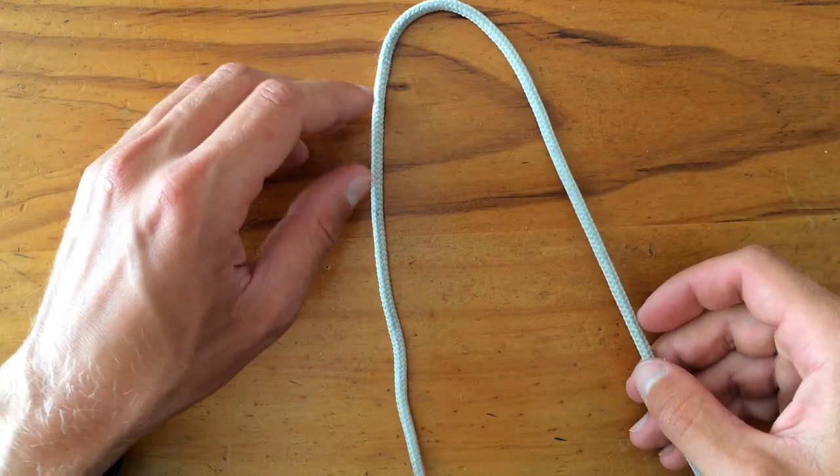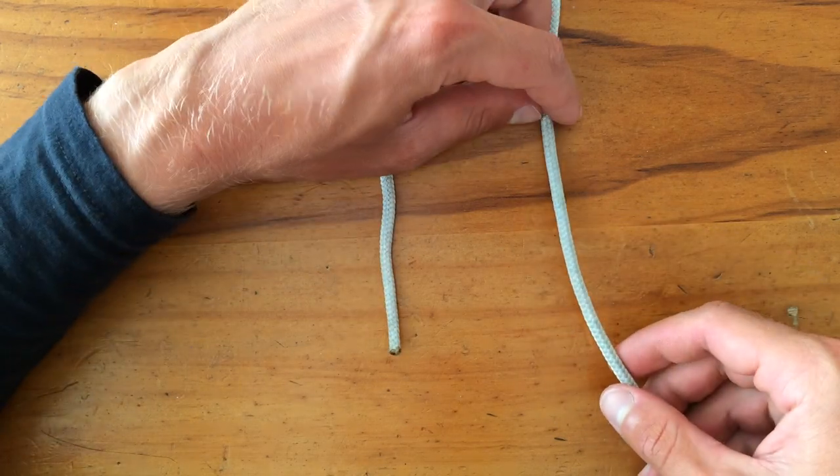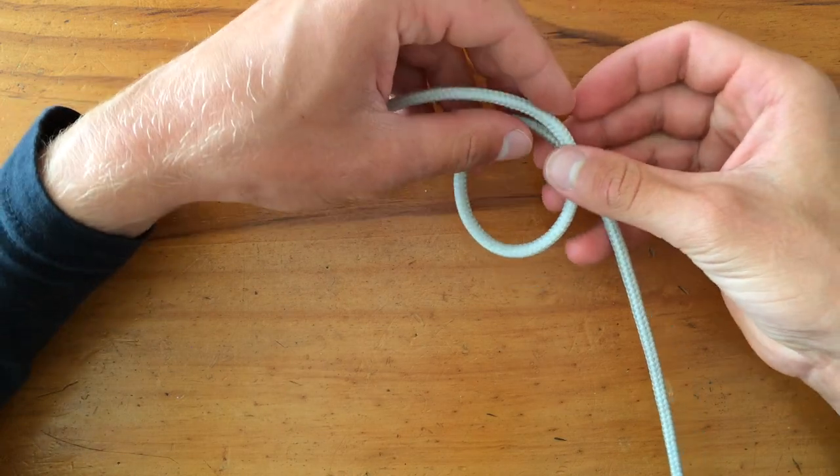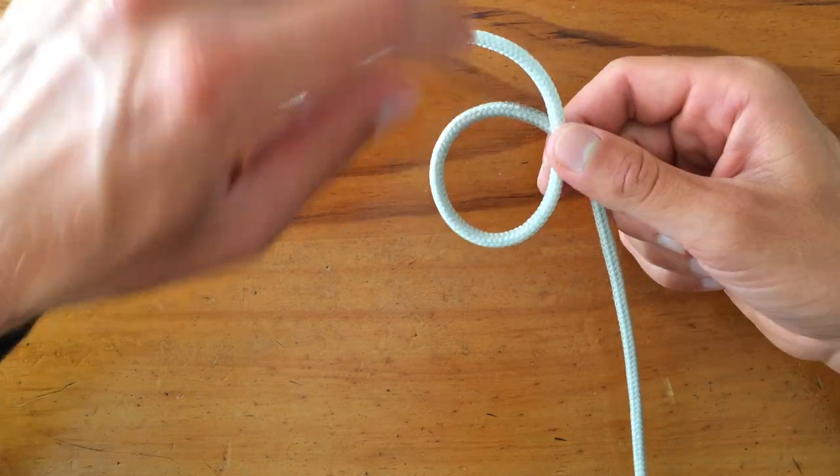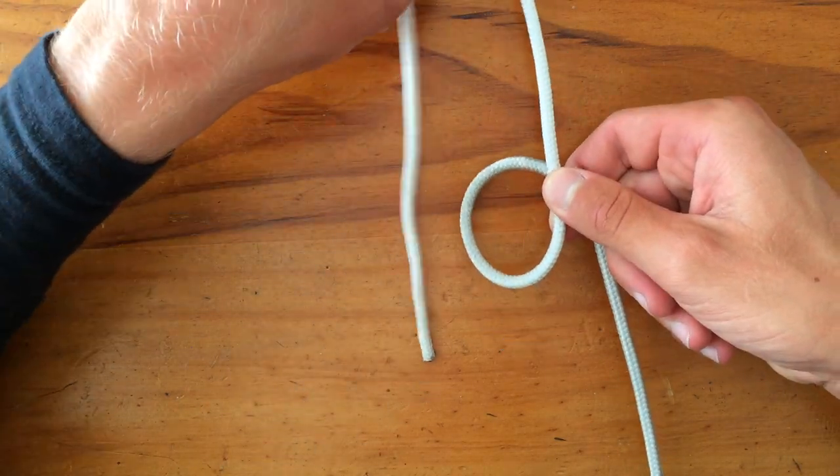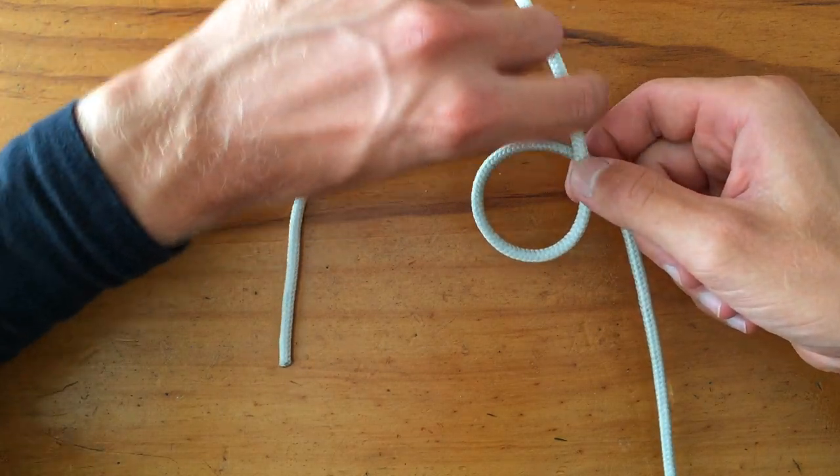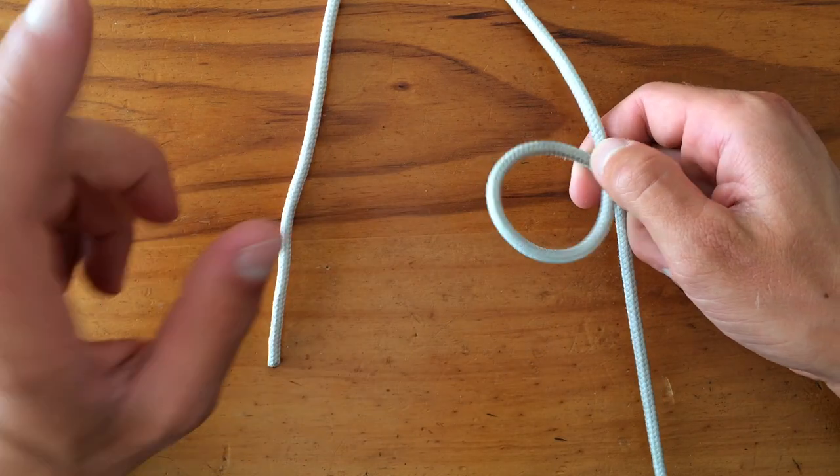I'm just going to readjust it. On your main line, you make a loop, but make sure that when you make that loop your main line is underneath the line that goes to whatever you're tying it around. It must be like this. If it's the other way around and this part of the rope is underneath your main line, it won't work at all.